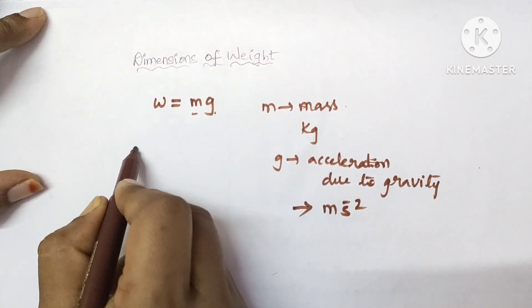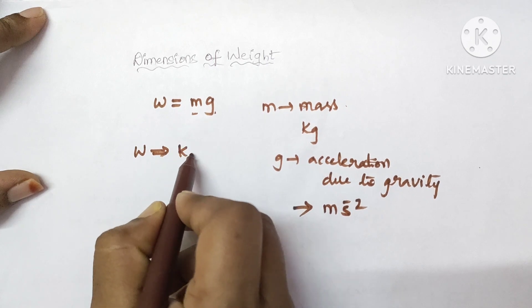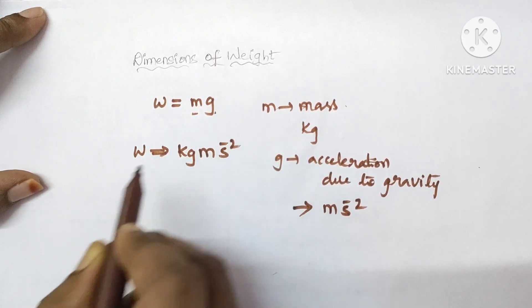Now, write the SI units here. So, SI unit of weight is kilogram meter S to the power of minus 2.